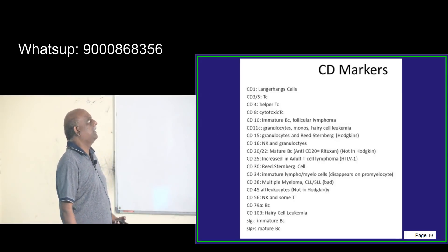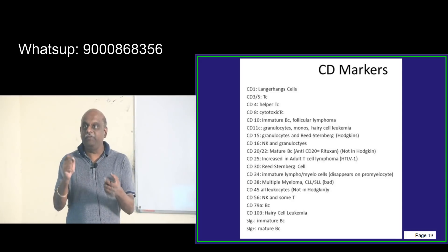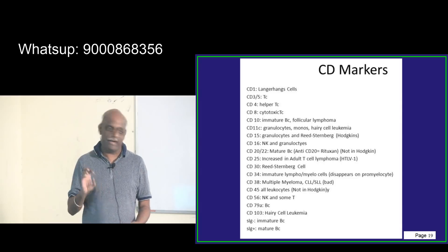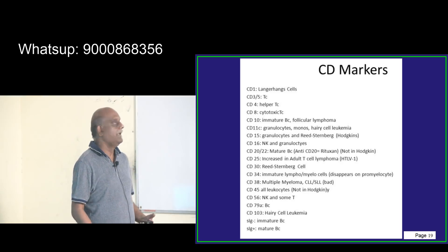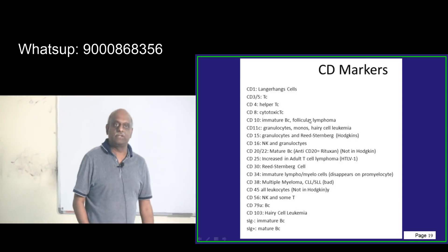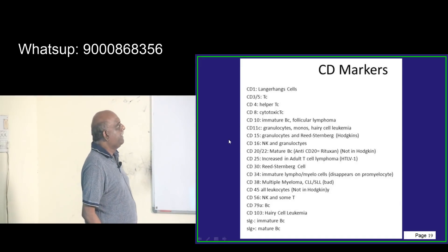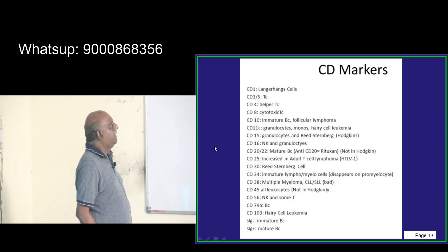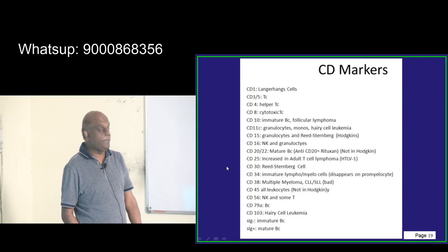Let us quickly run through the CDs. Notes will be available in the uMedico app where you can bookmark and review with reminders. CD1 is Langerhans cells, CD4 is helper T cells, CD8 is cytotoxic T cells. CD10 is follicular lymphoma with immature B cells, and CD11C are granulocytes, monocytes, and hairy cell leukemia.